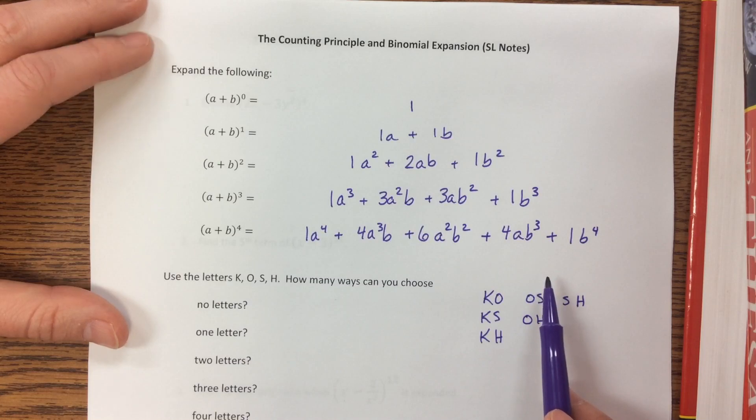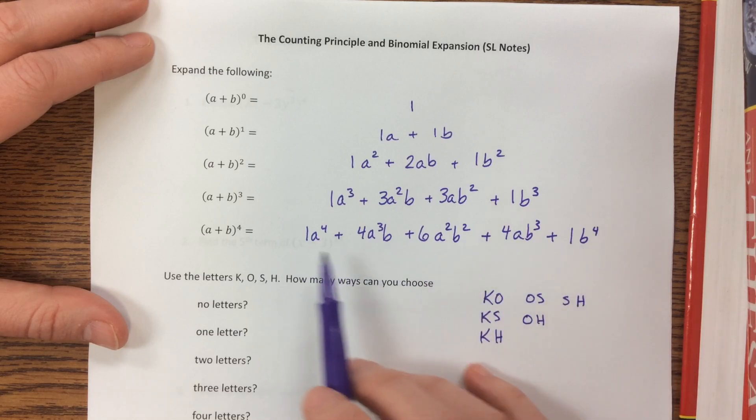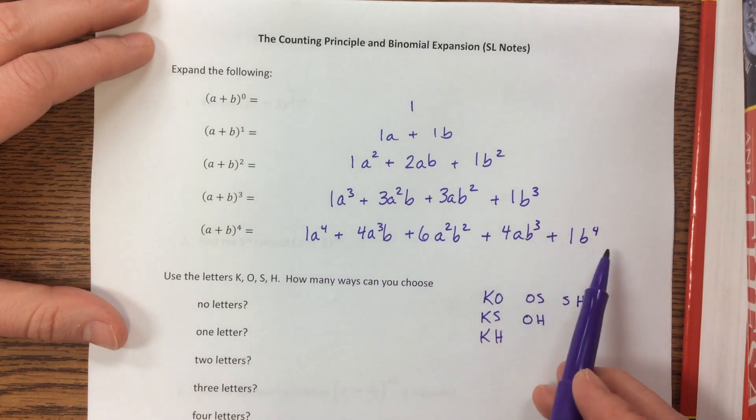A very similar thing happens when I have it to the fourth power. The coefficients 1, 4, 6, 4, 1. Then the exponents 4, 3, 2, 1, 0 a's. And then looking at the b exponents, it's b to the 0, b to the first, b to the second, b to the third, b to the fourth.